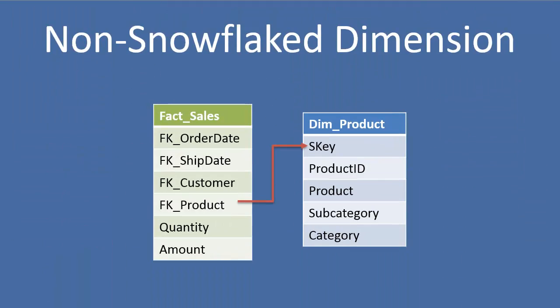An alternative to this is to simply not snowflake. Here we've got the same capabilities. We can slice by category, subcategory or product. But we've got one dimension to maintain and also one dimension for the business to interact with and join to the fact table.